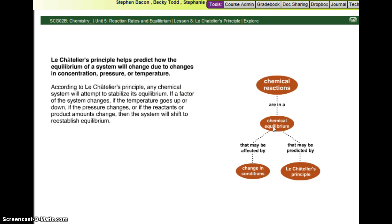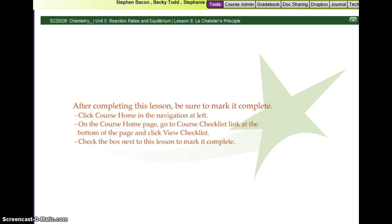Chemical reactions are in chemical equilibrium that may be affected by change in conditions, like amounts or concentration, pressure or temperature, and it can be predicted by Le Chatelier's principle. And that's it for this one.